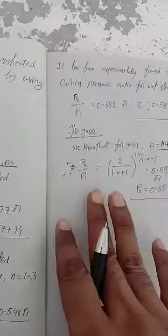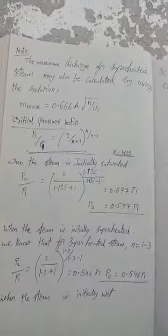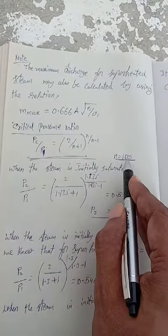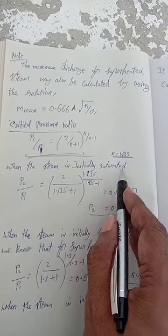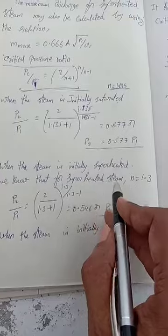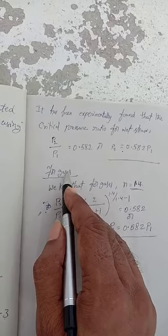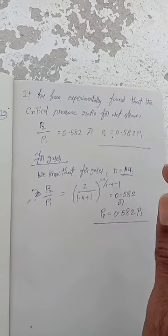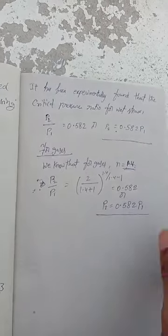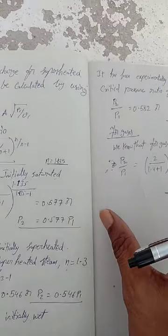To summarize: for saturated steam, n = 1.135; for superheated steam, n = 1.3; for gases in nozzles, n = 1.4. These are all standard values for n. If the problem gives a specific n value, use that; otherwise use these standard values.